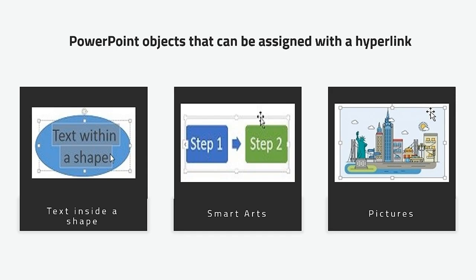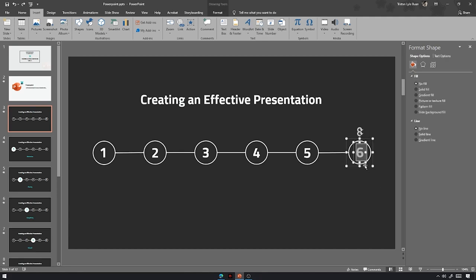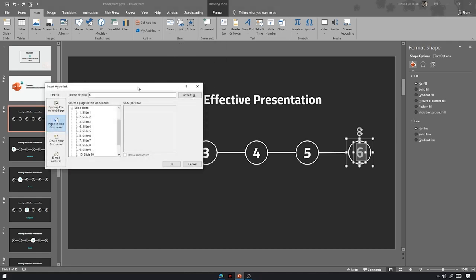To give you a quick demonstration of how we can create hyperlinks, I will close down the presenter view. As mentioned, hyperlinks can be applied to various objects in a PowerPoint presentation. For this example, I will use the text inside the circles on this slide. I'll highlight the number or text, then go to Insert and find Link — or press Ctrl+K — to open the Add Hyperlink pop-up window.